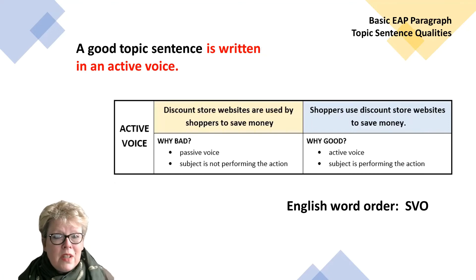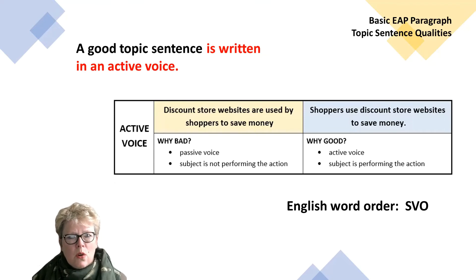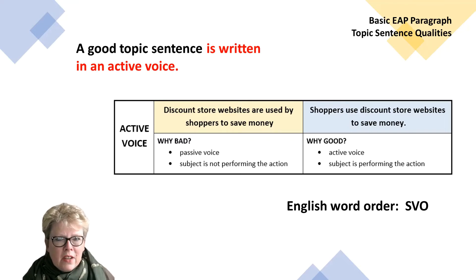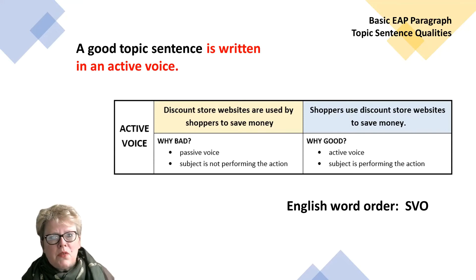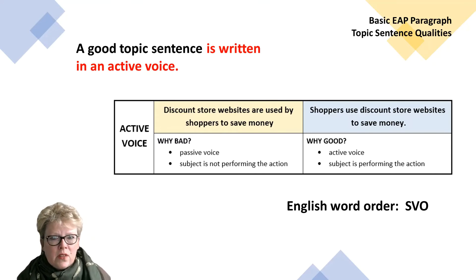A good topic sentence is written in an active voice. English word order is SVO: subject, verb, object. 'Discount store websites are used by shoppers to save money' is passive voice — the subject is not performing the action. Look at the second topic sentence: 'Shoppers use discount store websites to save money.' Active voice. The subject is performing the action — they're using the websites to save money. A good topic sentence is written in an active voice. Long topic sentences are not okay in general.